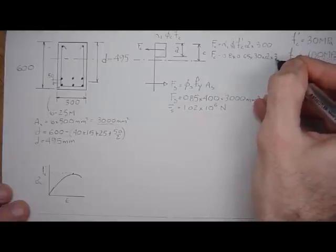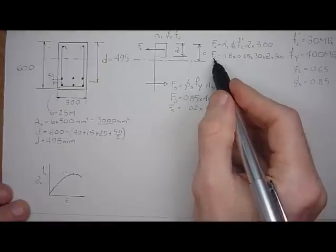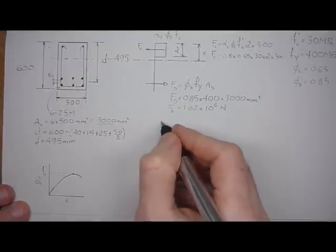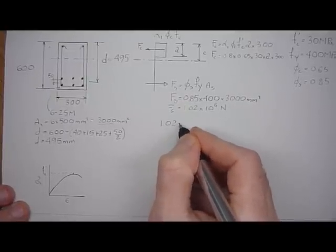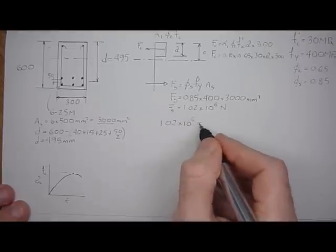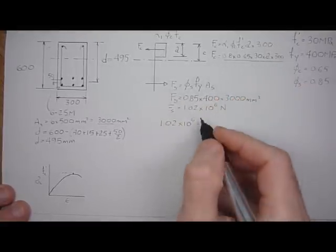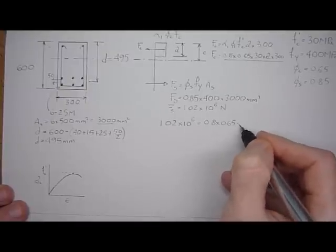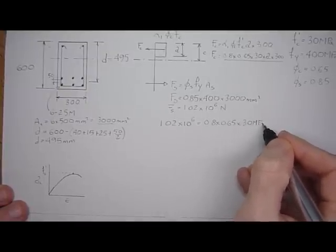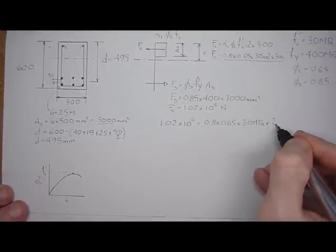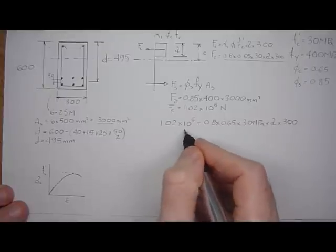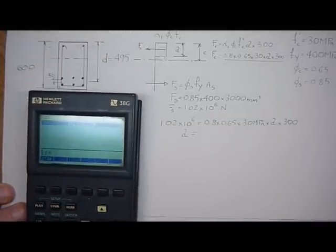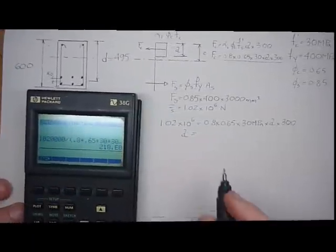A is unknown, and that's 300. So we can solve for A because we know the force in the concrete has to equal the force in the steel. There's no axial. We've solved the force in the steel. So we say 1.02 times 10 to the 6, force in the steel, equals this, the force in the concrete. 0.8 times 0.65 times 30 MPa times A times 300. So we can rearrange, solve for A. 1.02 e to the 6, divided by 0.8, 0.65, 30, 300. A equals 218 mm.